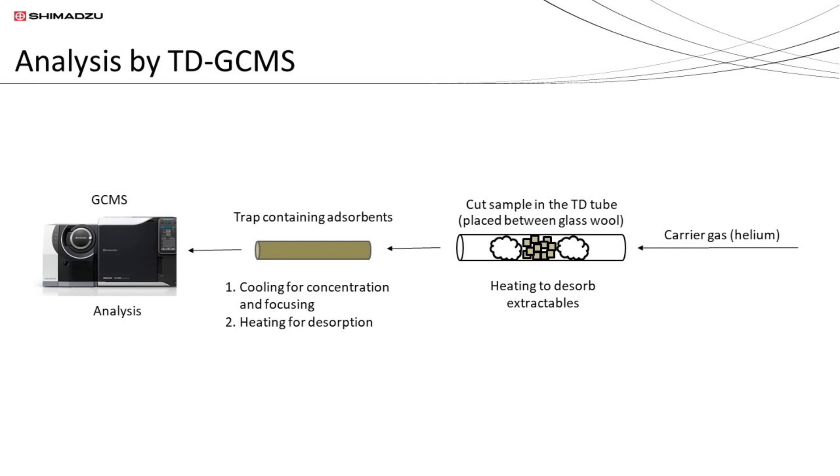Subsequently, the trap was heated to desorb the extractables. After desorption, the extractables were subjected to GC-MS analysis for separation and detection.